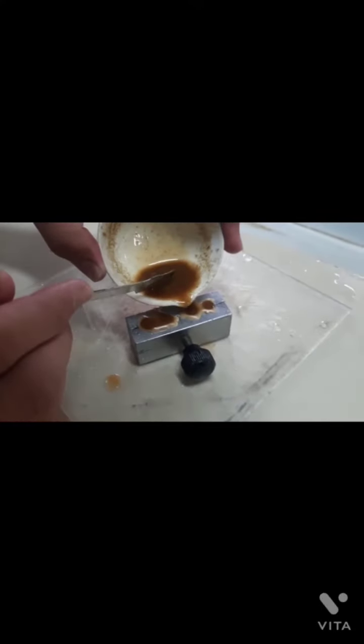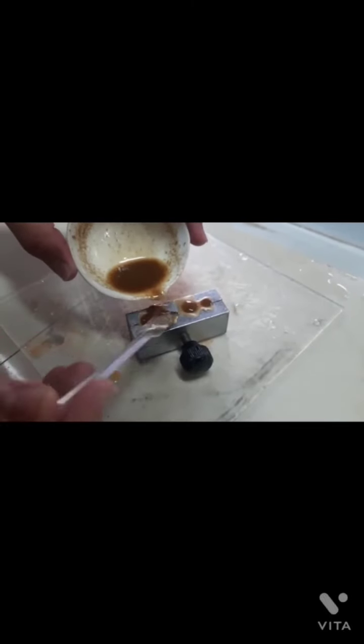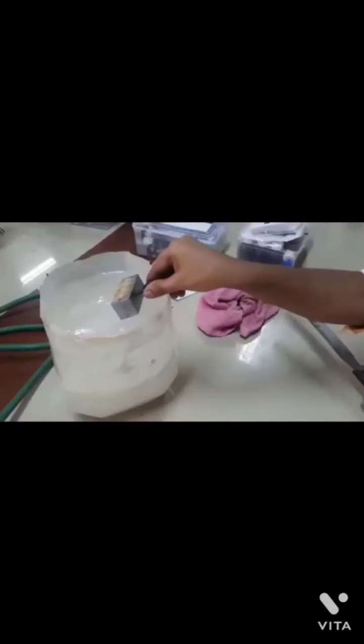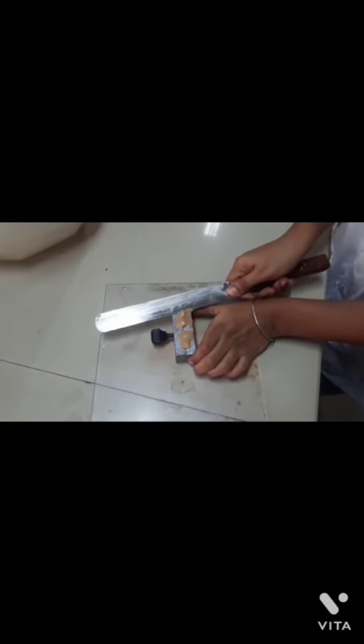After mixing cocoa butter and tannic acid, pour the molten mass into a mold and allow to solidify using ice bath. After solidification, remove excess mass using sharp knife.